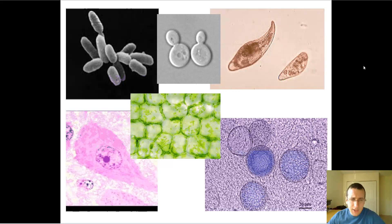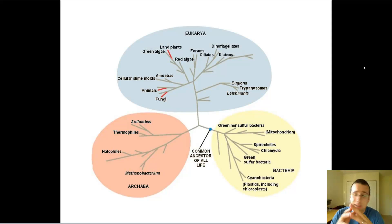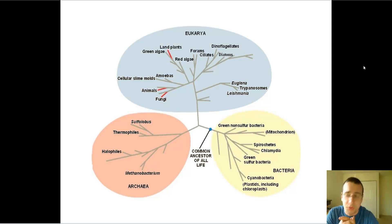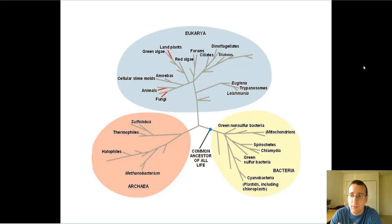Either way, taxonomy is the mechanism of actually marking or separating these organisms into groups based on the evolutionary relationships that exist between them, or in the hierarchy of organization or complexity.